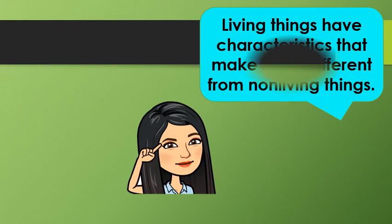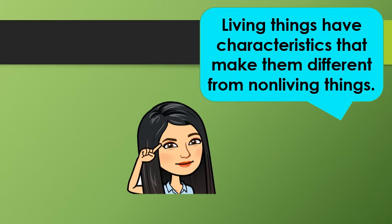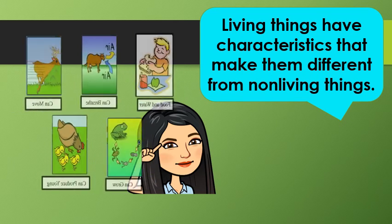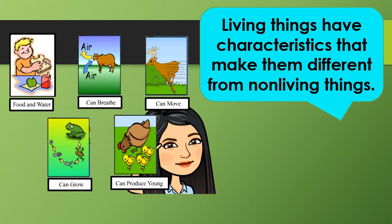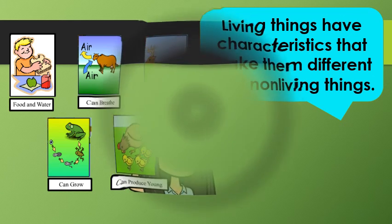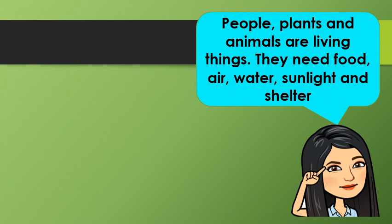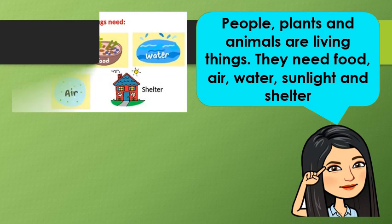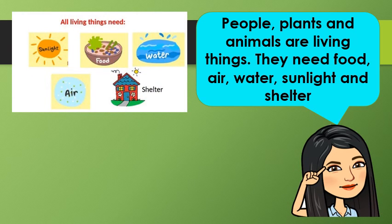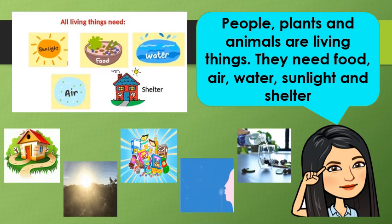Living things have characteristics that make them different from non-living things. Let's study them one by one. People, plants, and animals are considered as living things. They need food, air, water, sunlight, and shelter for them to survive and live.